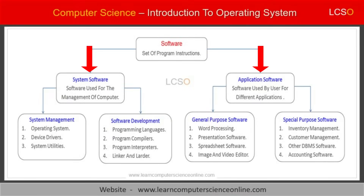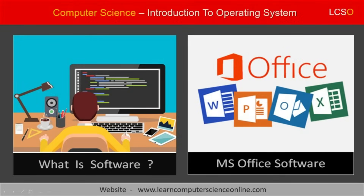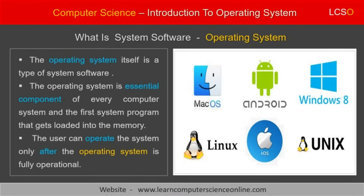The computer system needs basically two types of software components. The first type of software is called an application software, and the second type of software is called a system software. An application software is designed to allow the computer user to perform various tasks on the computer. For example, Microsoft Word is the most commonly used application software for creating text documents. Whereas the system software is a special type of software internally used by the computer system itself to manage and operate the computer system. An operating system is the most important system software and it is an essential component of every computer.